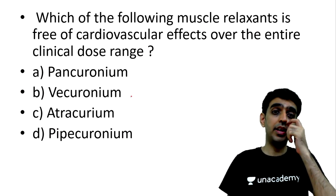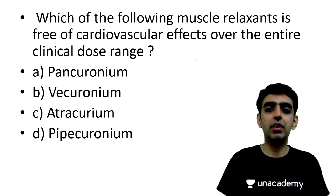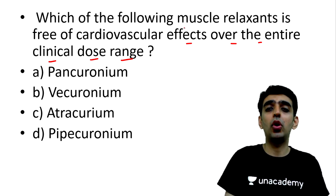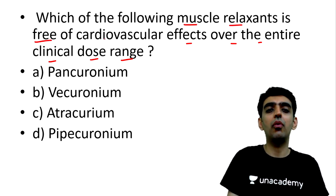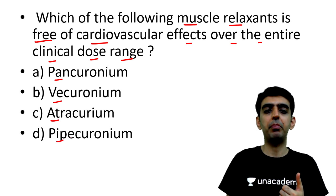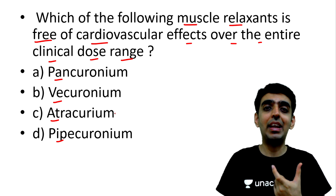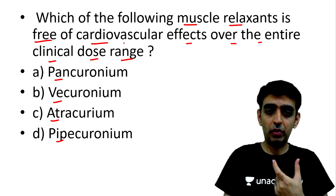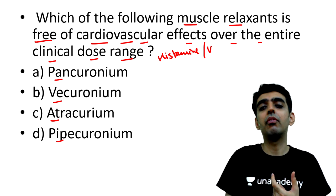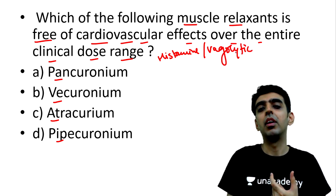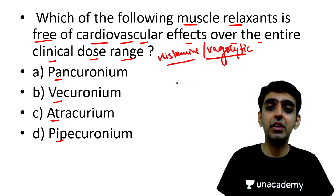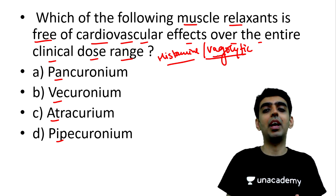The next question: which of the following muscle relaxants is free of cardiovascular side effects over the entire clinical dose range? Options are pancuronium, vecuronium, atracurium, and pipecuronium. Cardiovascular effects here refer to either histamine release or vagolytic action.